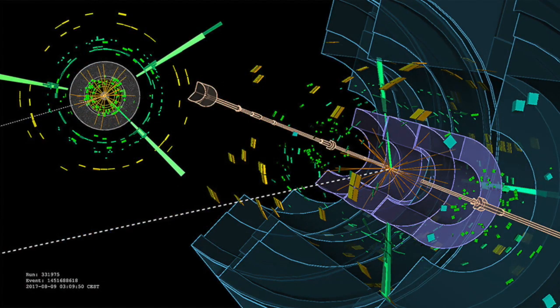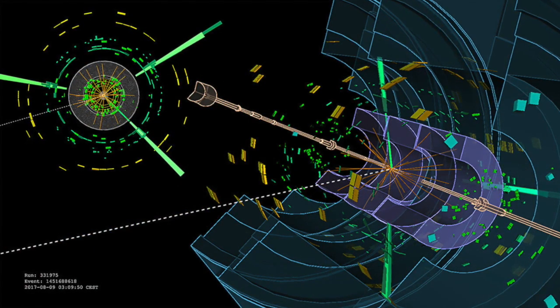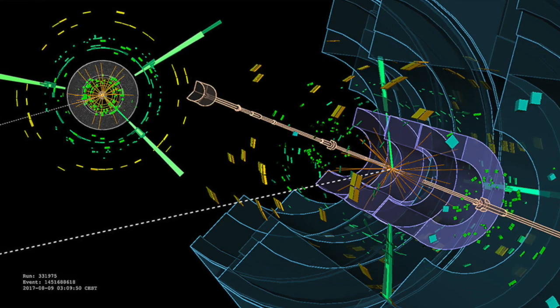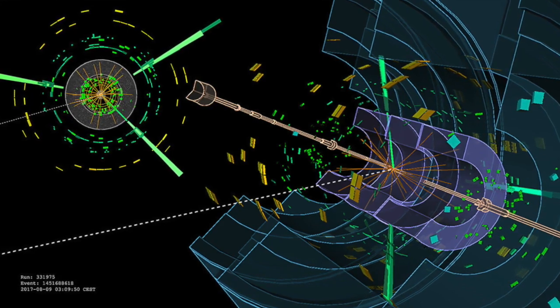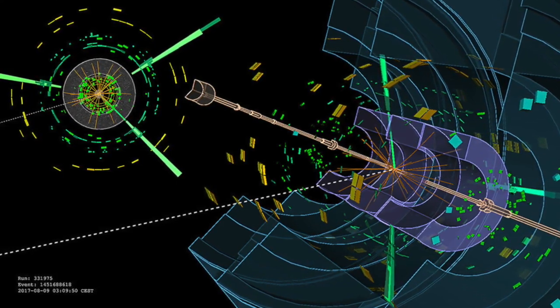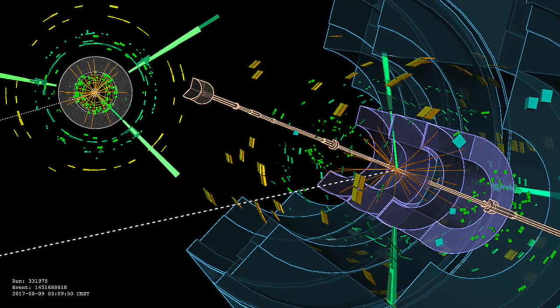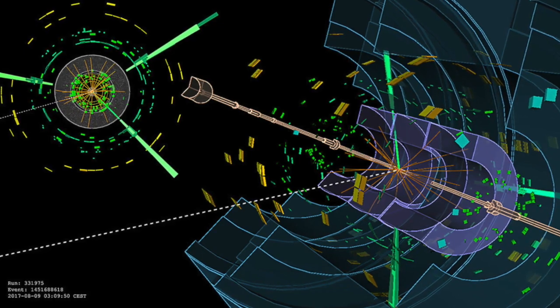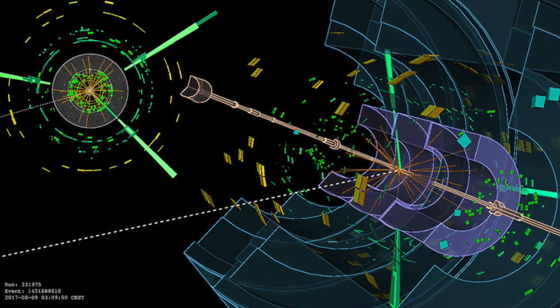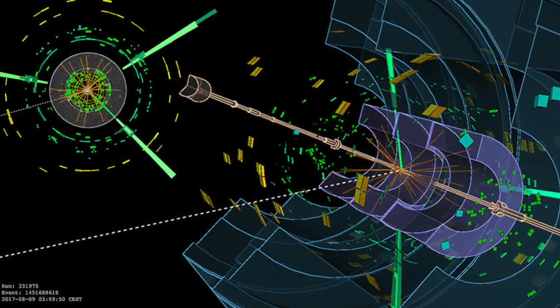When a particle ionises the detector material, Atlas records the energy deposited, which is proportional to the square of the particle's charge. Hence, magnetic monopoles, or HECOs, would leave large energy deposits along their trajectories in the Atlas detector.